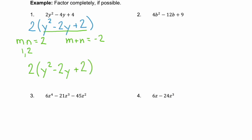Let's look at example 2: 4b squared minus 12b plus 9. We don't have a GCF, so we move on to step 2. Do we have a special type of factoring here? Maybe. That first term, 4b squared, is the same as (2b) squared.